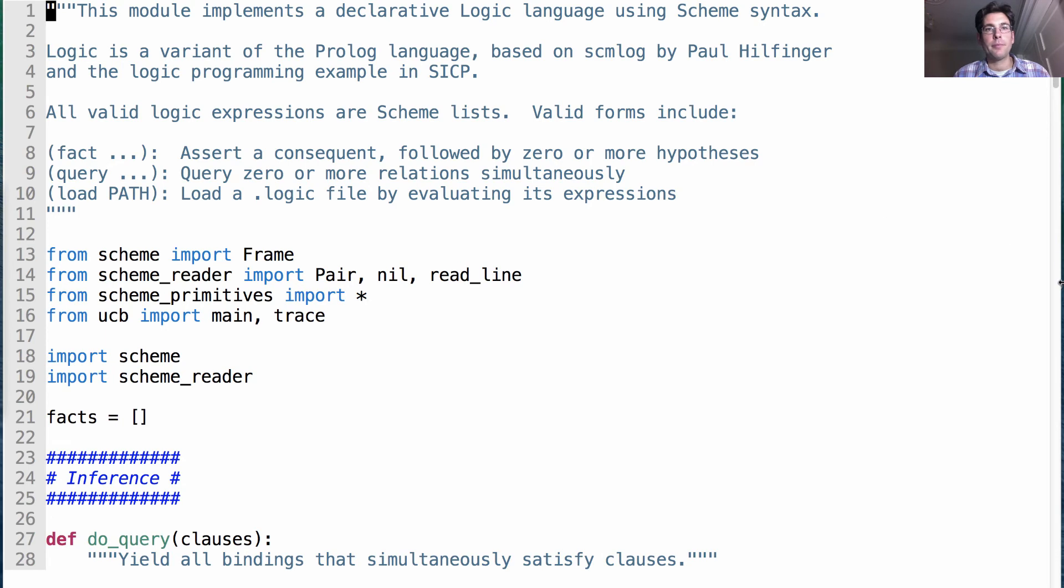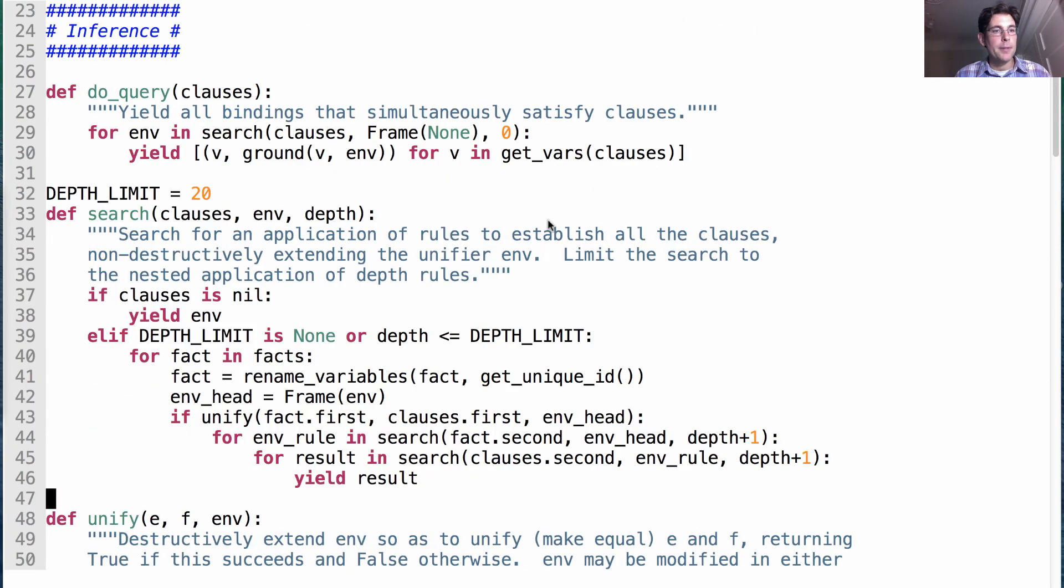Let's take a look at the code. Here's logic.py. This module implements a declarative logic language. Search is here. And as you can see, it's slightly different than what I said, because there are some base cases. If we've run out of clauses, then we found a successful assignment. And also there's some work to limit the depth, which is the number of times that we call search. So every time we call search from within search, we increment depth so that we don't go past 20 different nested recursive calls, because otherwise it would just take too long. So here's the entire implementation. It looks a lot like what I told you. For a fact in facts, we rename the variables. We create a new environment so that we're able to backtrack if something goes wrong. We unify the fact in the clause.